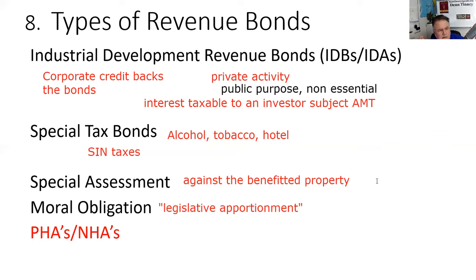If the bonds are likely to default, bondholders go to the state legislature for a vote — all in favor of sequestering money from the general budget to pay back bondholders. More yays than nays, you get paid. More nays than yays, the bonds default. That process is called legislative apportionment — that's a term associated with moral obligation bonds. They have a very good track record because before the vote, rating agencies from Fitch, Moody's, and S&P are present, and failing would trigger a credit downgrade costing far more than just paying back the bonds.